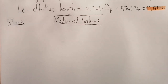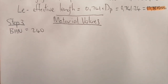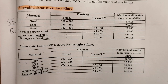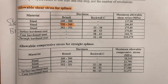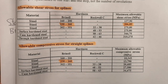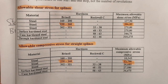Step 3 — Material values. Our material has a Brinell hardness of 240. Looking at the allowable shear stress table for splines, a Brinell hardness of 240 falls between 230 and 260 BHN, giving a maximum allowable shear stress of 206.85 MPa. From the allowable compressive stress table for straight splines at the same hardness range, the maximum allowable compressive stress is 13.79 MPa.